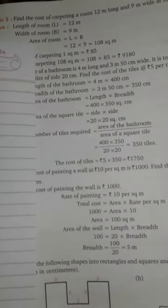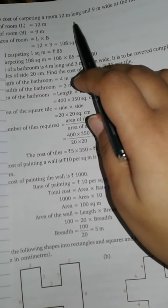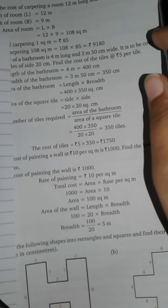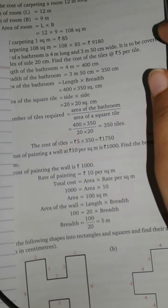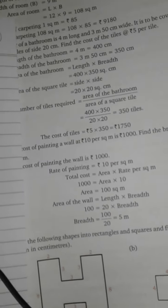Next: find the cost of carpeting a room 12 meters long and 9 meters wide at the rate of 85 per square meter. This is the same type of question.